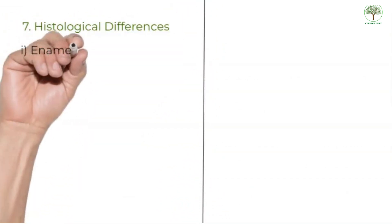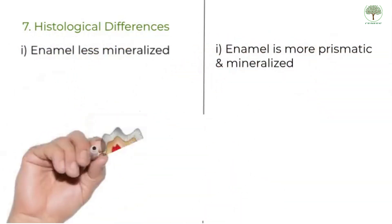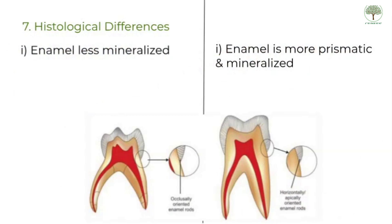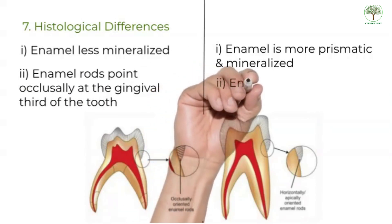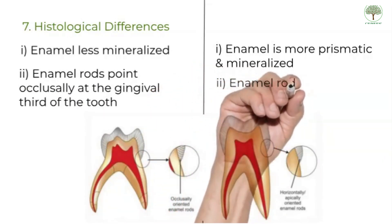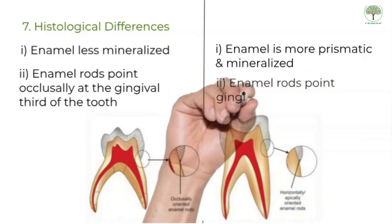The main histological difference is in the direction of the enamel rods at the cervical third of the tooth. They are directed occlusally in the primary dentition, and for the permanent teeth, the enamel rods are pointing towards the gingiva or they are directed gingivally. This is important while preparing class 5 cavity. The dentin is more mineralized in the permanent dentition.